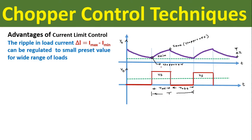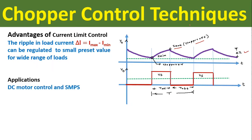When the load current equals I0_min, the chopper switch or thyristor goes into the on condition, and when the load current equals I0_max, the thyristor goes into the off condition. The difference I0_max minus I0_min equals the ripple in load current ΔI0. In current limit control, ΔI0 can be regulated to a small preset value for a wide range of loads. Applications: current limit control is used in DC motor control and SMPS — switch mode power supply.